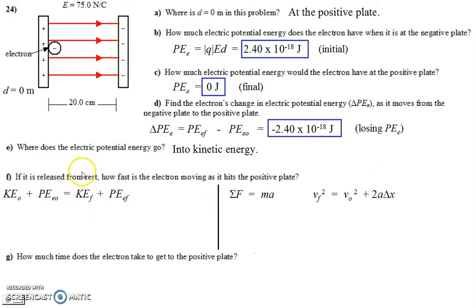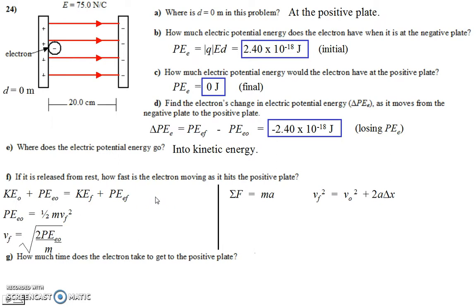From the energy standpoint, the initial kinetic energy is zero since it's released from rest. The final potential energy is also zero since it ends at the positive plate. So it's just a transformation: initial electric potential energy equals final kinetic energy, which is one-half mVf squared. Rearranging gives Vf equals the square root of two times the initial potential energy divided by the mass. The mass is not given in the problem, but we're told it's an electron — every electron has the same mass, so look it up.